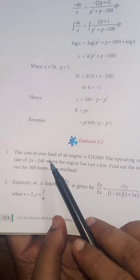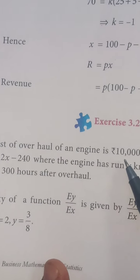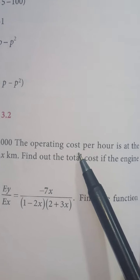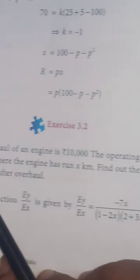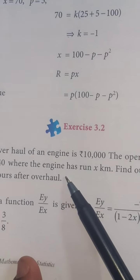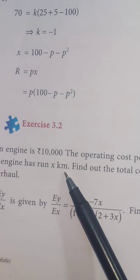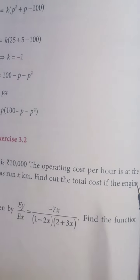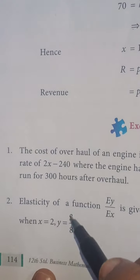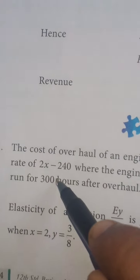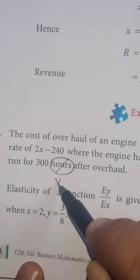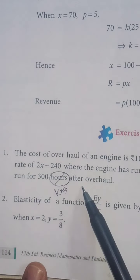The cost of overhaul of an engine is Rs. 10,000. The operating cost per hour is at the rate of 2x-240 where the engine has run x kilometers. Find out the total cost if the engine runs for 300 hours, not hours. Here you are given kilometers, it has to be changed into kilometers. KMS. After overhaul.